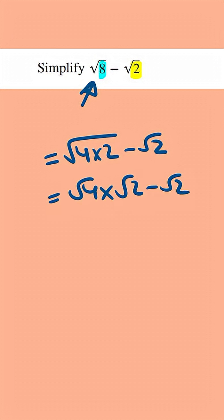...and then minus root 2. The square root of 4 is equal to 2, and so this is going to be 2 times root 2, and then we've got minus root 2.